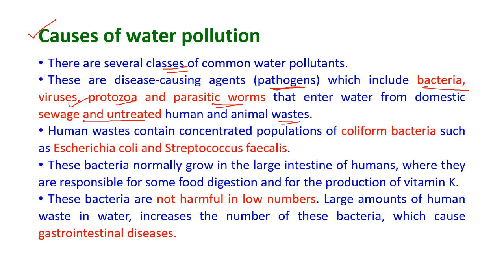Human wastes contain concentrated populations of coliform bacteria such as Escherichia coli and Streptococcus faecalis. These bacteria normally grow in the large intestine of humans where they are responsible for food digestion and production of vitamin K. These bacteria are not harmful in low numbers, but when the amount increases they will cause gastrointestinal diseases.